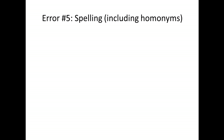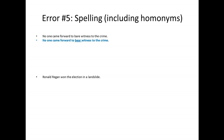Let's look at spelling errors, including homonyms, that we see often in student papers. Sometimes it's a homonym — for example, 'No one came forward to bare witness to the crime.' A homonym is a word that sounds exactly the same but is spelled differently. It should be 'bear witness.' Same sound, different word. Here's another example of what often happens in student papers.